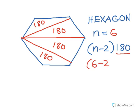So six minus two times 180, or four triangles times 180 degrees each, is 720 degrees. And that's the sum of all of the angle measures in any hexagon.